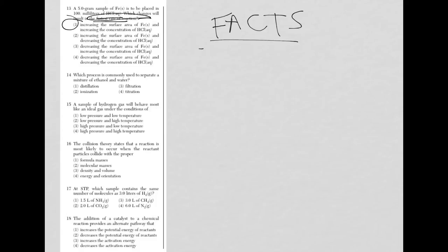This is what I'm going to call a two-for-one question. You actually have to answer both parts correctly in order to get it right. Always start with the one, which is increasing surface area. You would have crossed out choices three and four, because decreasing surface area would not increase the rate of reaction. And then, increasing concentration of HCl, or choice one.